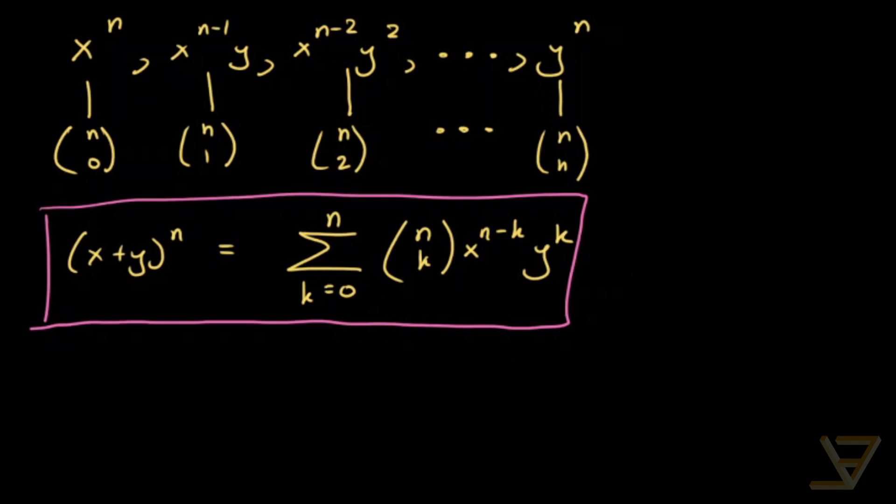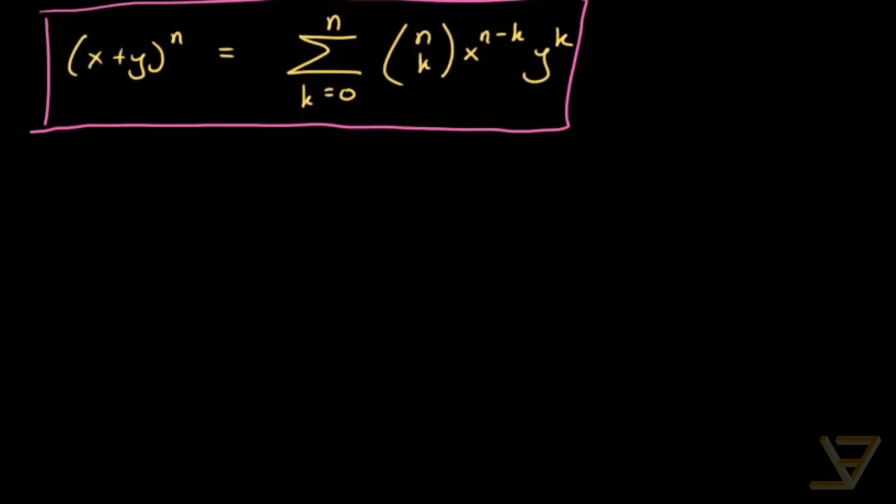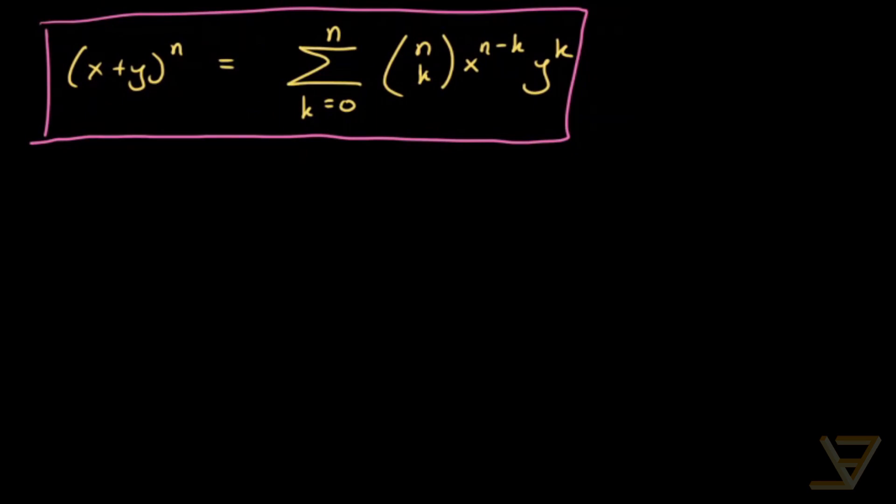I just want to show you a quick demonstration of the power of this identity. And that is that we have 0 equals 1 minus 1 to the power of n. So we have x equals 1 and y equals negative 1. And this is equal to, by the binomial theorem, k equals 0 through n, n choose k and negative 1 to the power of k.